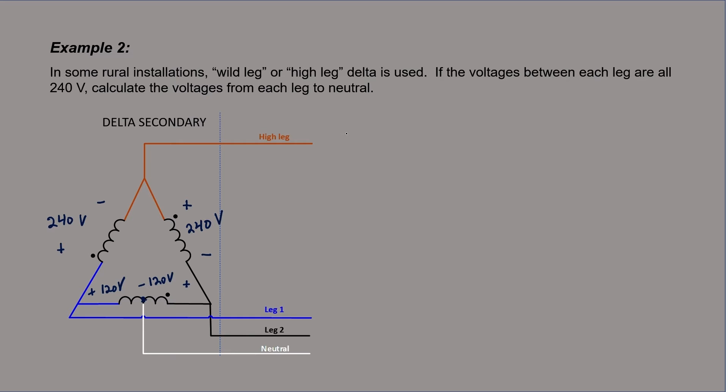In the problem, we're told to calculate the voltages from each leg to neutral. Some of them are easy. For example, the voltage from leg one to neutral is just 120 volts RMS. We've already written that on our circuit. Likewise, the voltage from leg two to neutral is also 120 volts. However,